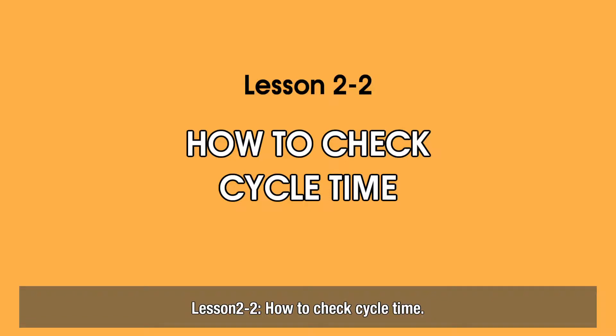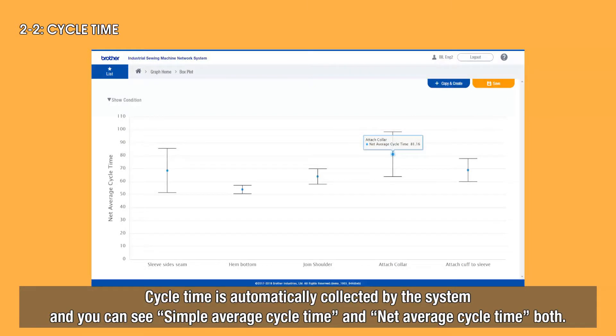Lesson 2-2, How to Check Cycle Time. Cycle time is automatically collected by the system, and you can see simple average cycle time and net average cycle time both.